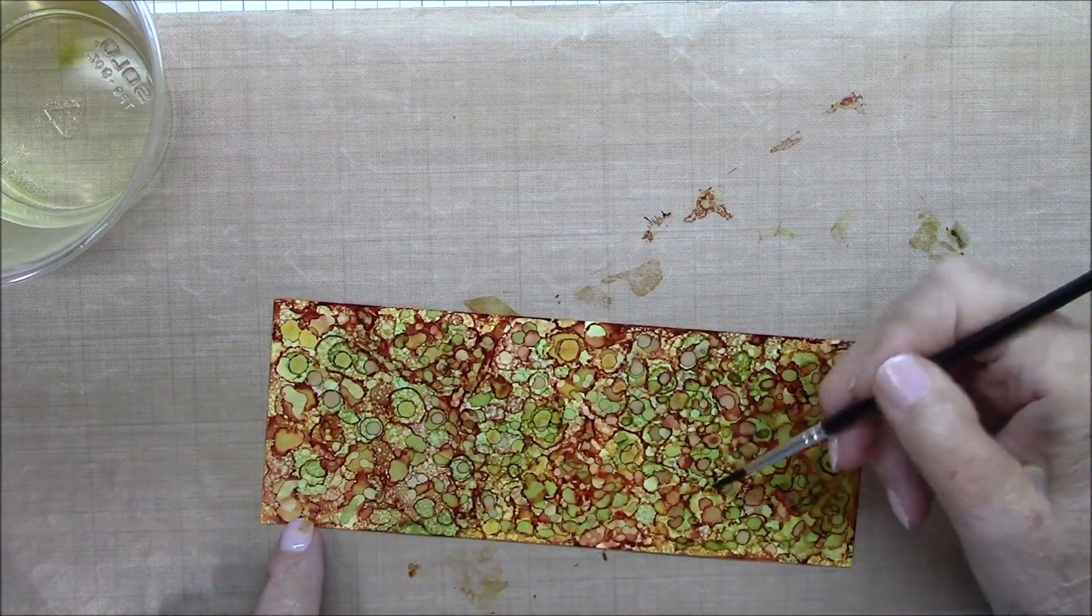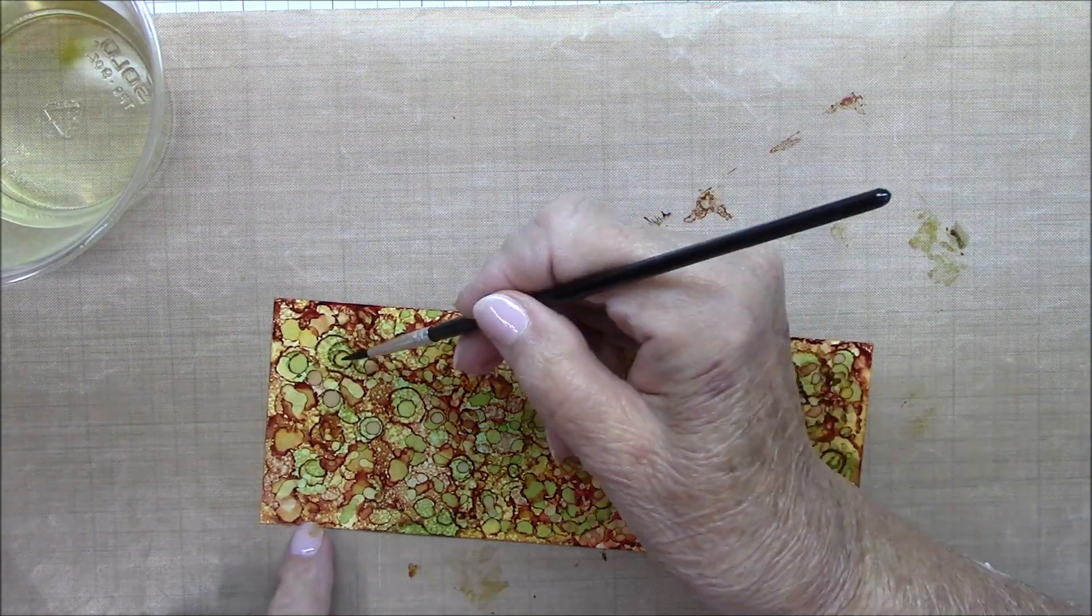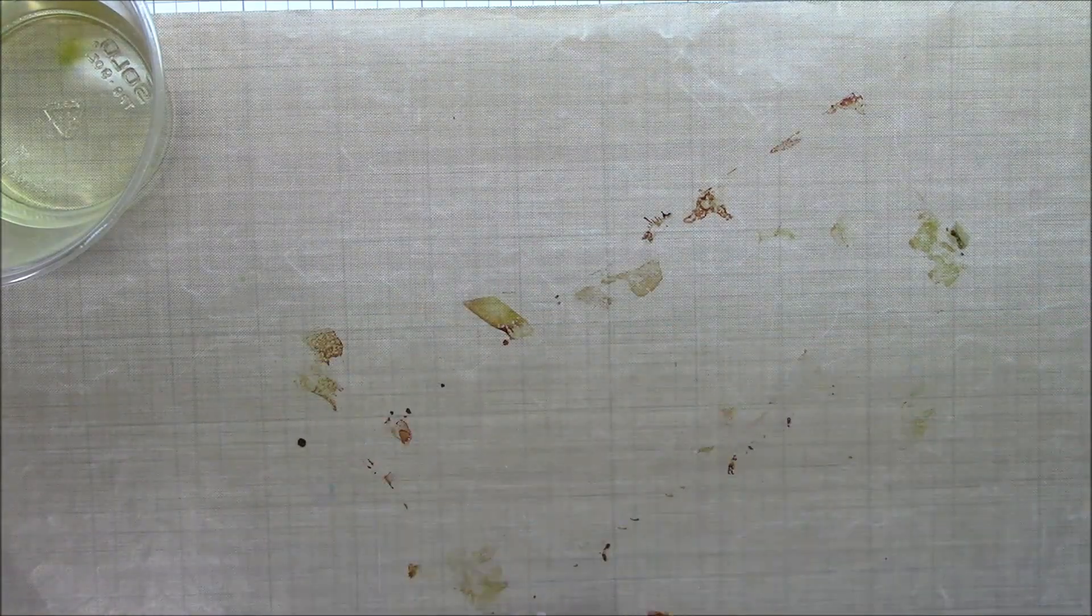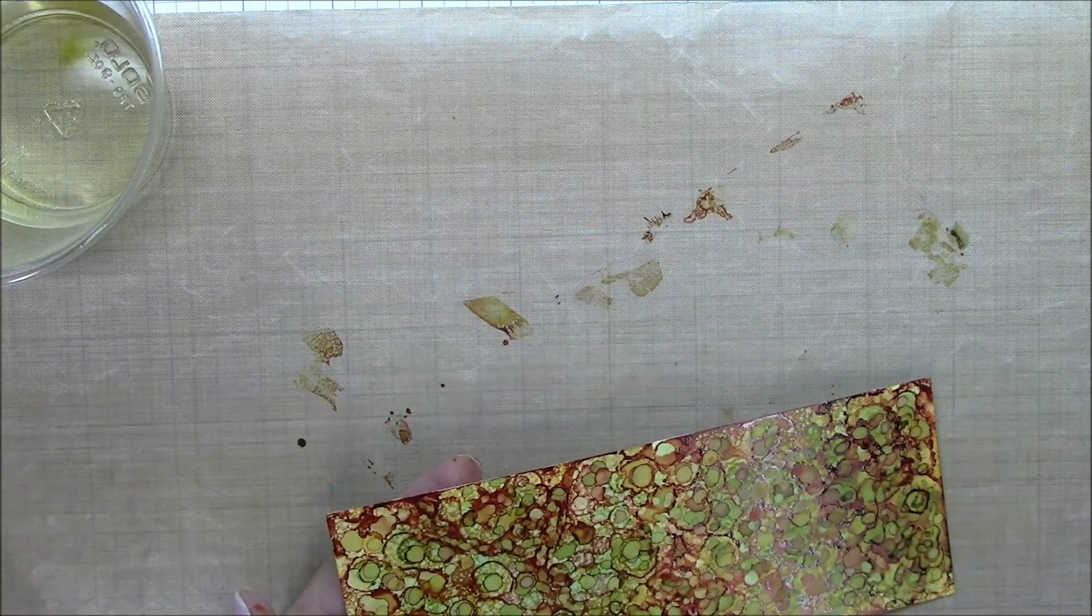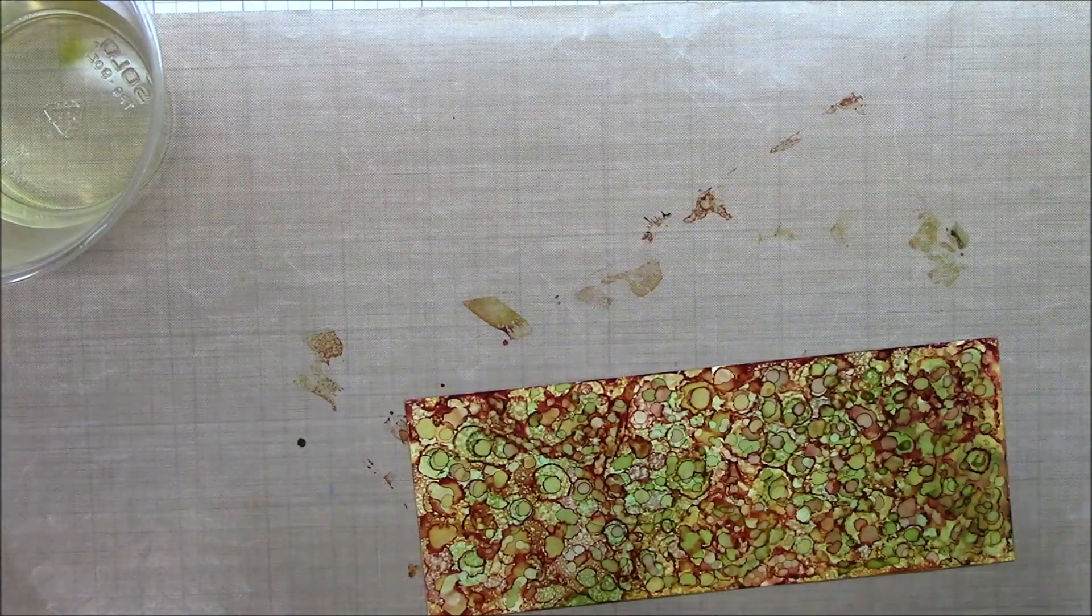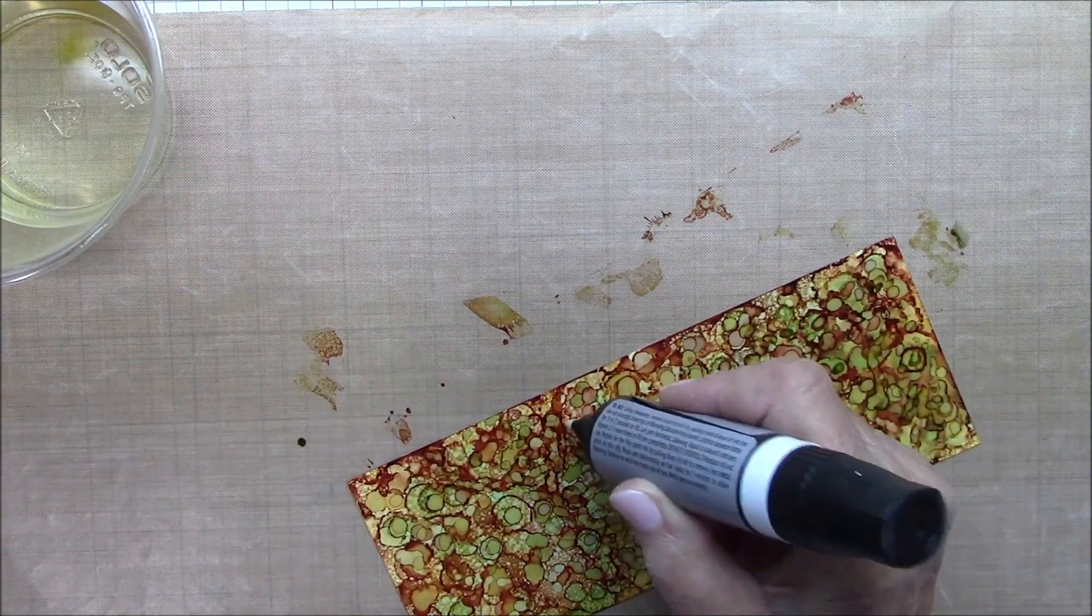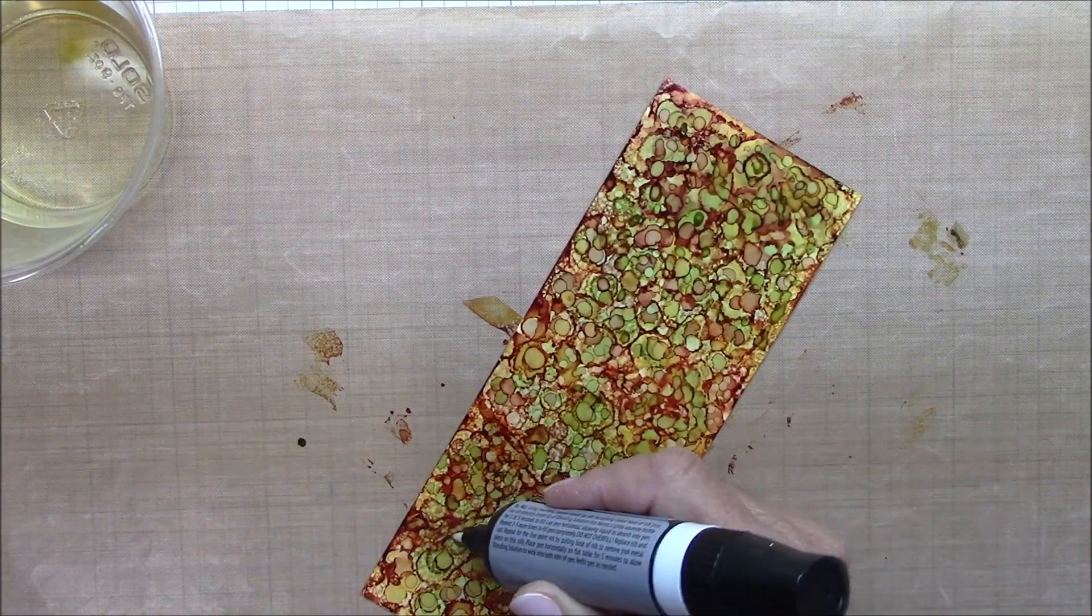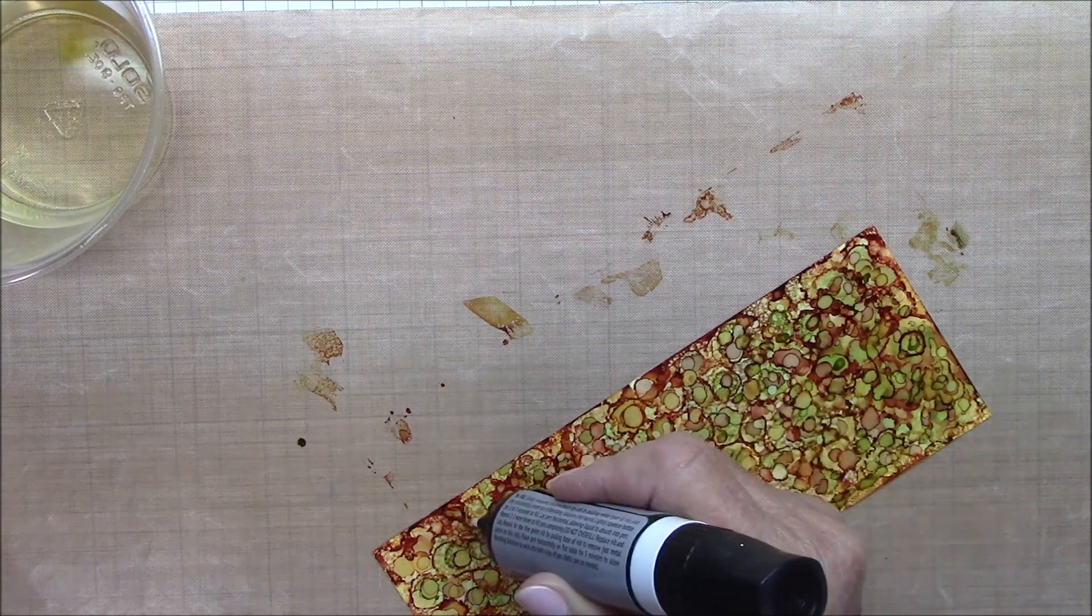And again, this is so subjective. It is whatever pleases your eye. If you have too much green in one area, go in and add a little bit of the terracotta or the butterscotch. So now I'm almost done. I'm going to go in and break up some of those color concentrations just a little bit more.